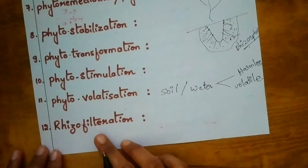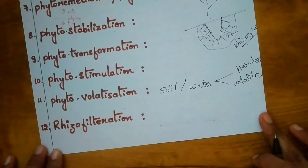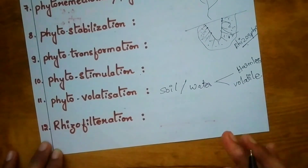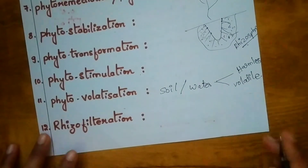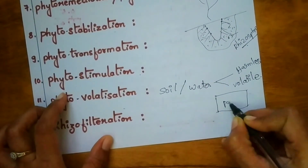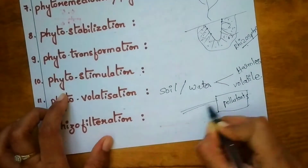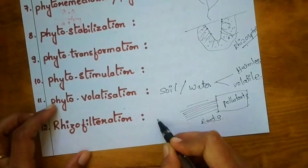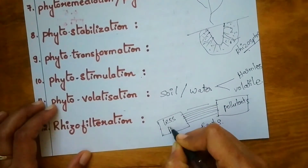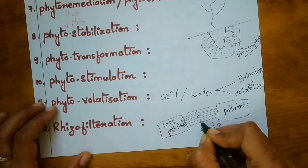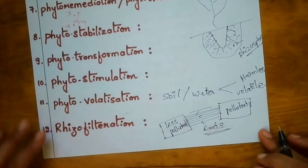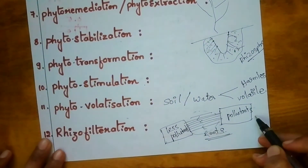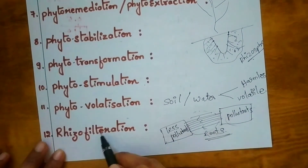The last term is rhizofiltration. Rhizofiltration means employing a mass of roots to remove pollutants or contaminants. If you apply roots to an area containing toxic substances, the roots absorb the pollutants, making the environment less polluted. That is called rhizofiltration.